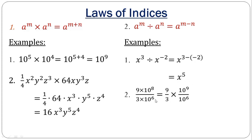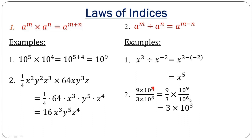In the second division example, there is a coefficient of 9 on the left and a coefficient of 3 on the right. Please note this is actually to the power of 9, not 8. Just like before, the coefficients divide: 9 divided by 3. Then 10 raised to the power of 9 divided by 10 raised to the power of 6 gives you 3, and then the common base with 9 minus 6 equals 3.